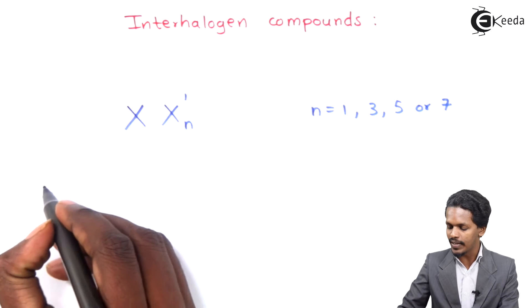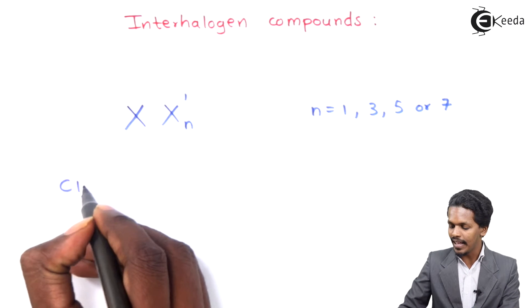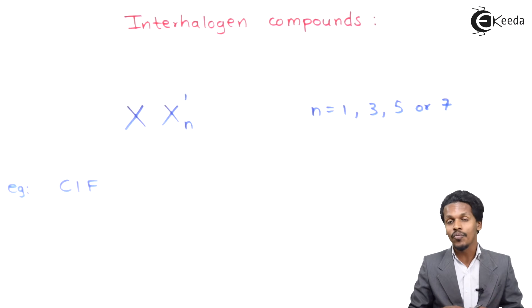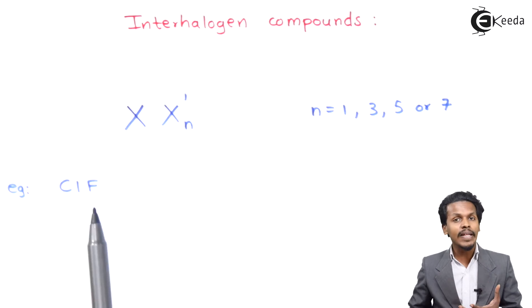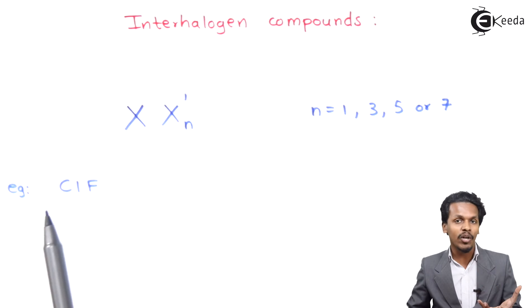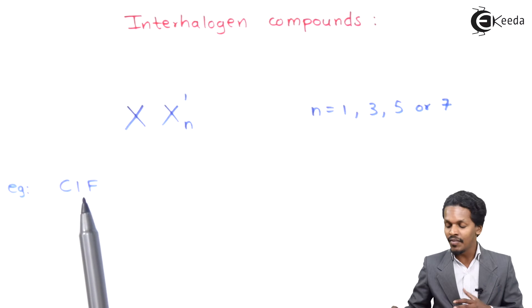That's the reason we have certain examples. For example, if we talk about CLF, this is an example I've considered, CLF, that is Chlorine Monofluoride. In this case, if we talk about the atomic size, obviously chlorine is having more atomic size compared to that of fluorine.